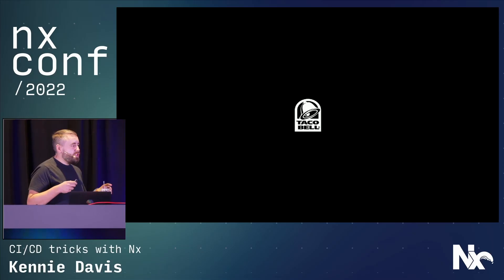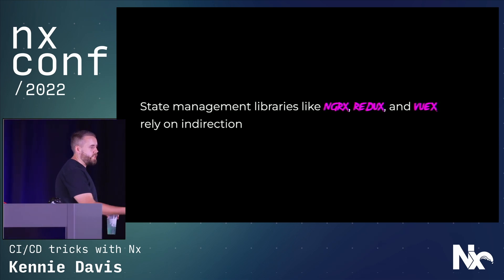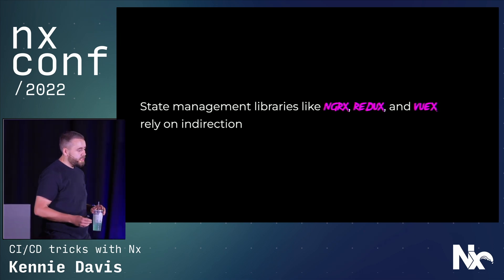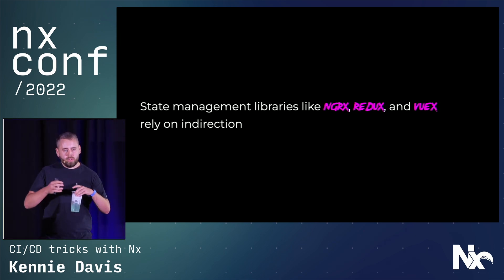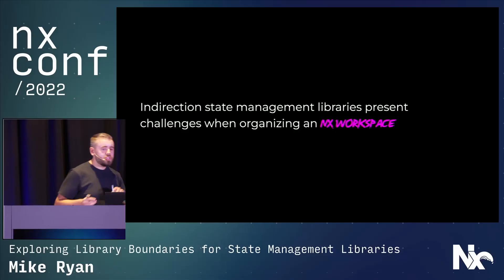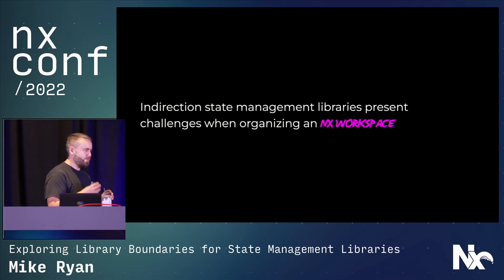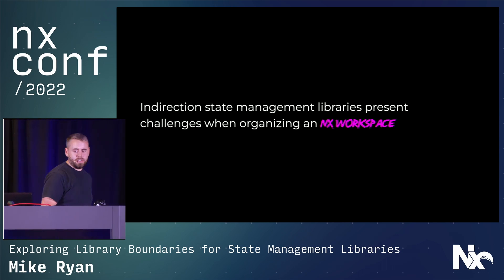When you're building a Redux application, or maybe ngrx or Vuex, you're really relying on something called indirection. In these state management libraries, indirection allows you to build modules of code that manage side effects, state, and your presentation layer independently — without those modules of code knowing how the other one actually works. So this presents some unique challenges when trying to figure out how to organize your NX workspace — how do you split up your state management code from your presentation code without creating really messy choke points in your NX dependency graph?